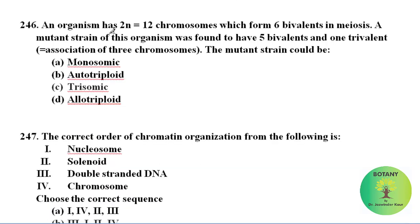An organism having two equal chromosomes which form six bivalents in meiosis — a mutant strain of this organism could be trisomic, as you can see in this one trivalent.